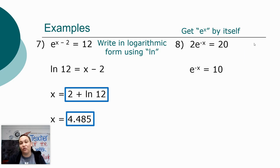Now that it's in exponential form, I can rewrite it in logarithmic form. Remember, it's log base e of 10 equals negative x. Log base e, or that's ln, of 10 equals negative x. So the natural log of 10 equals negative x.